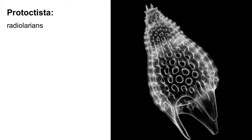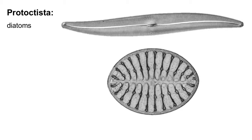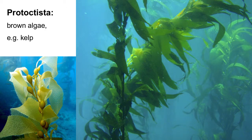This is the skeleton of a radiolarian, another group of unicellular protoctists. These skeletons come in many different shapes, and I'm always fascinated by the fact that a single cell can make such a complicated skeleton. Isn't it amazing? Diatoms are another group that forms skeletons around their cells. Brown algae, like this kelp shown here, are also part of protoctista.